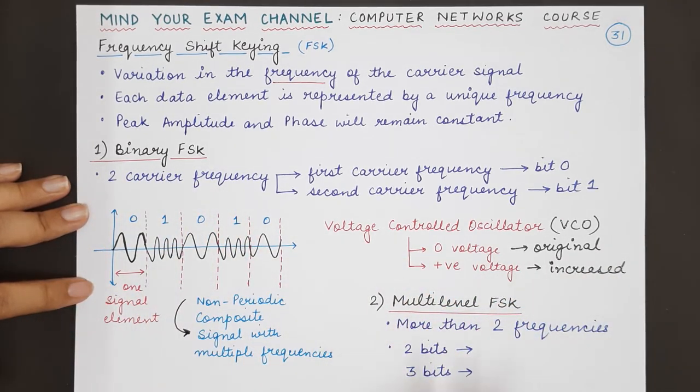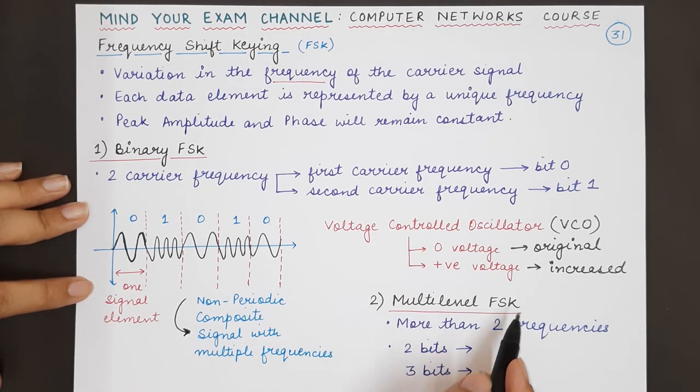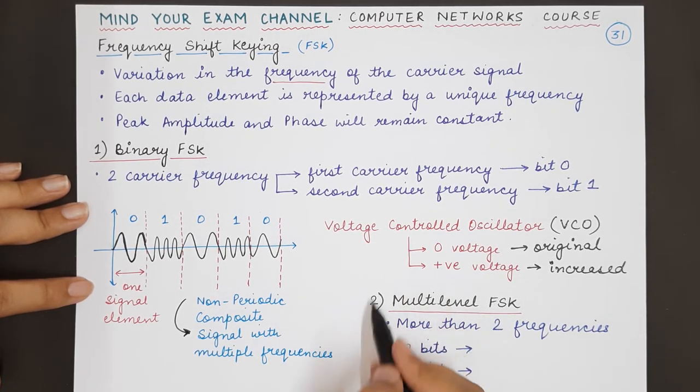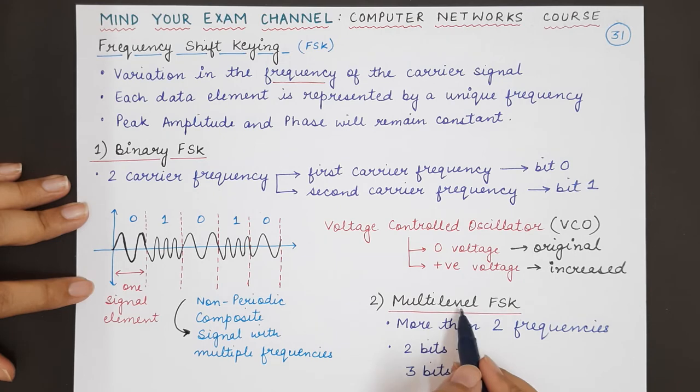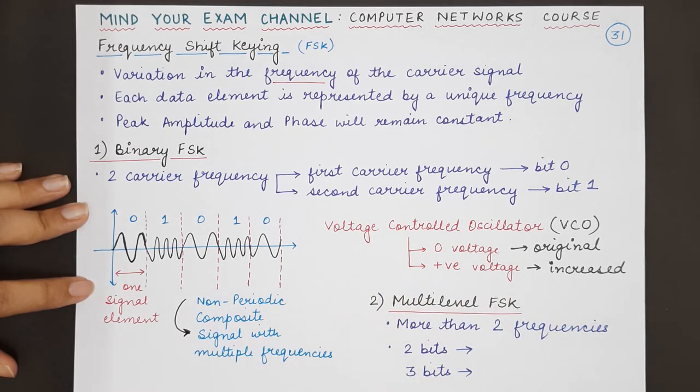There are different implementations in different places. Now coming to the second type of frequency shift keying, which is the multi-level shift keying. Multi-level means multiple types of frequencies, so there are more than two frequencies representing more than two bits.